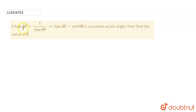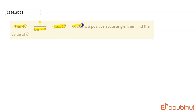Welcome guys. If tan 4θ equals to 1 by tan 6θ, or tan 4θ equals to cot 6θ, and θ is a positive acute angle, then find the value of theta.